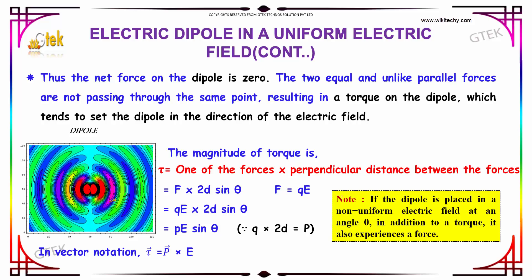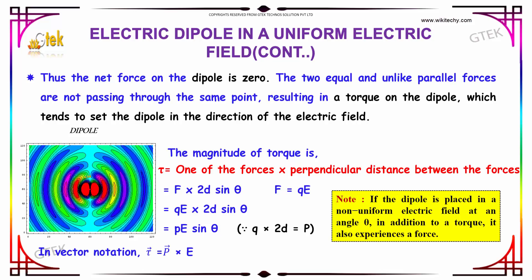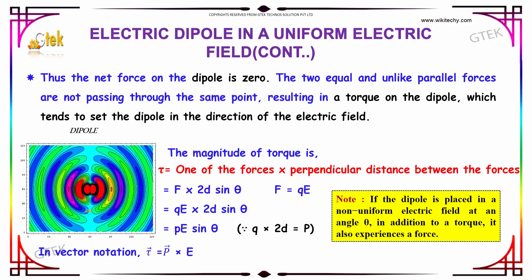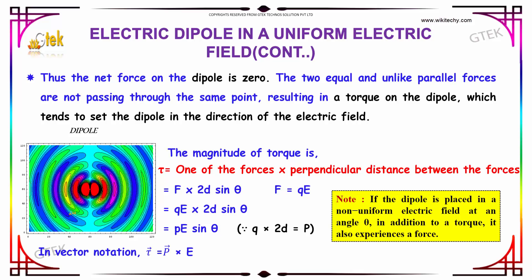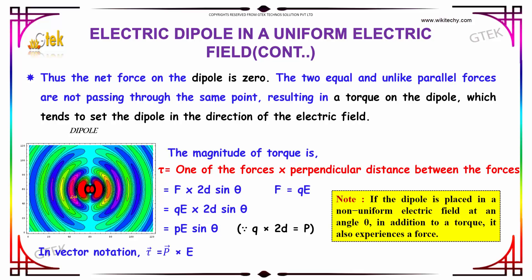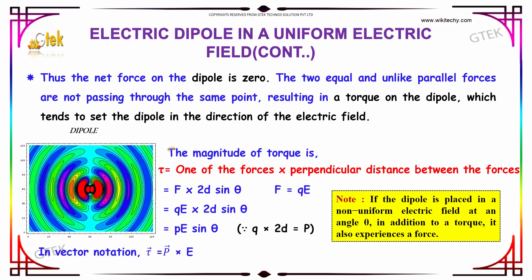Thus the net force on the dipole is zero. The two equal and unlike parallel forces are not passing through the same point, resulting in a torque on the dipole, which tends to set the dipole in the direction of the electric field.